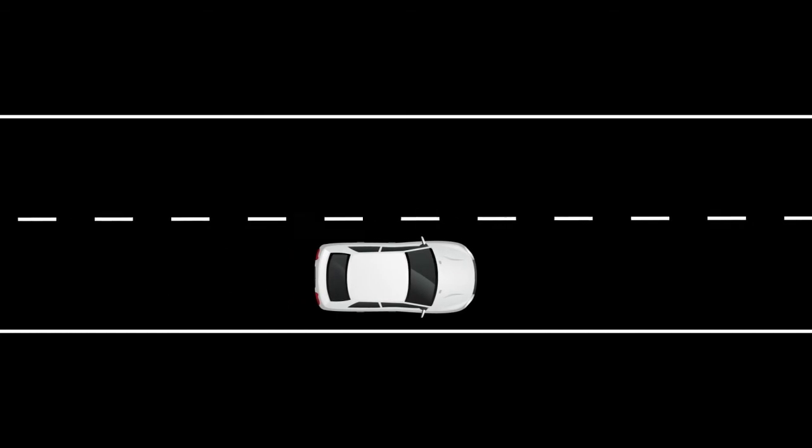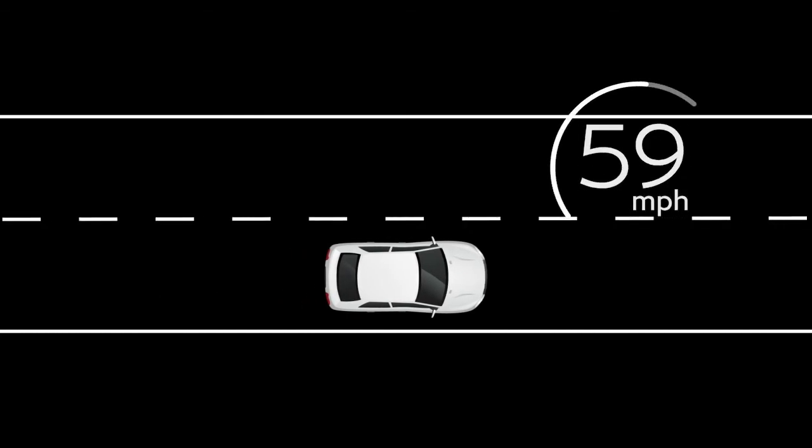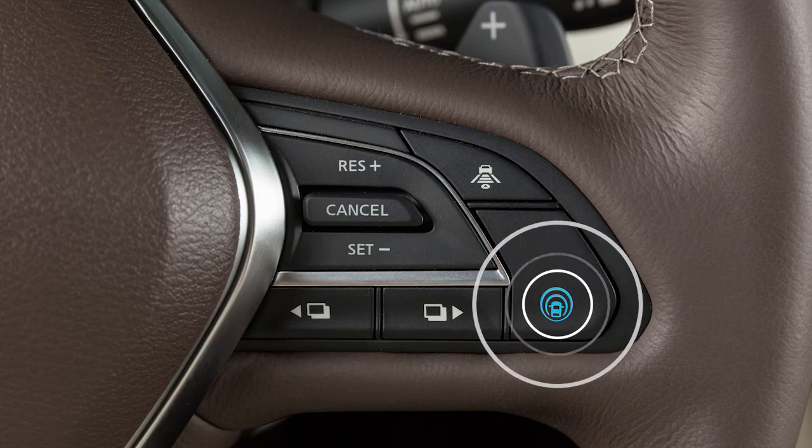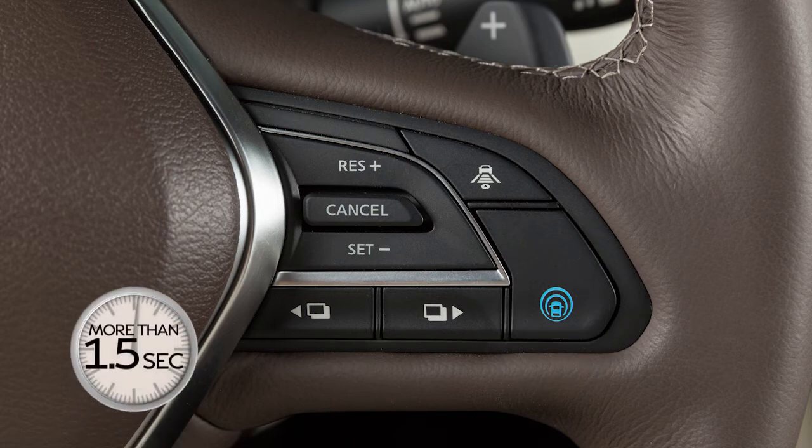When the road ahead is clear, the driver can set the speed range between approximately 20 to 90 miles per hour. Or, you may choose the conventional or fixed speed cruise control mode by pushing and holding the steering wheel cruise on-off switch for longer than approximately 1.5 seconds.